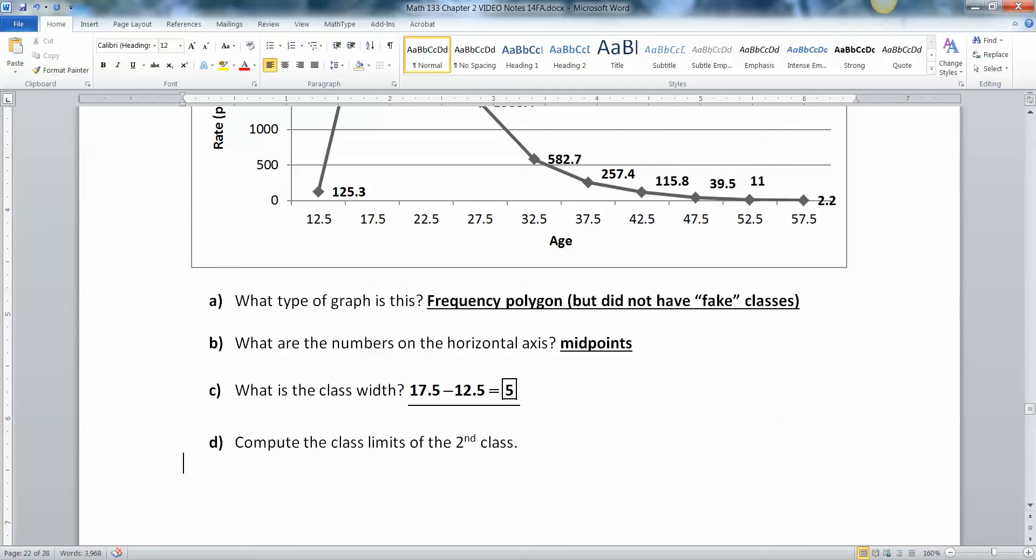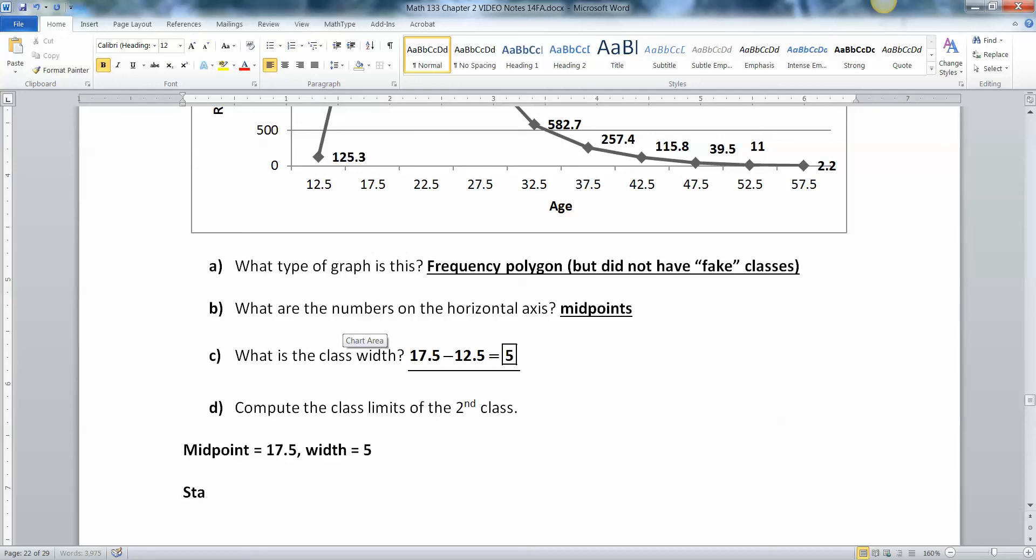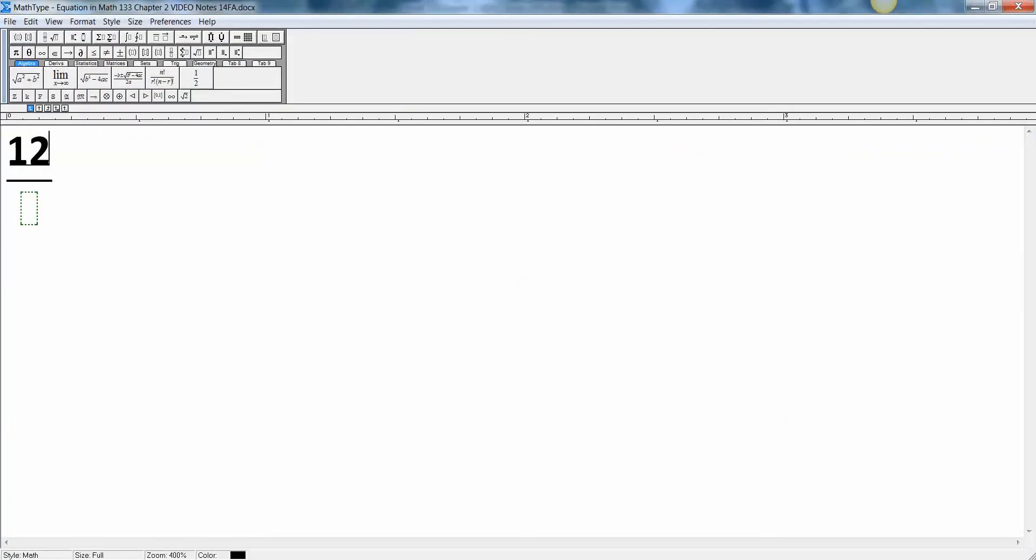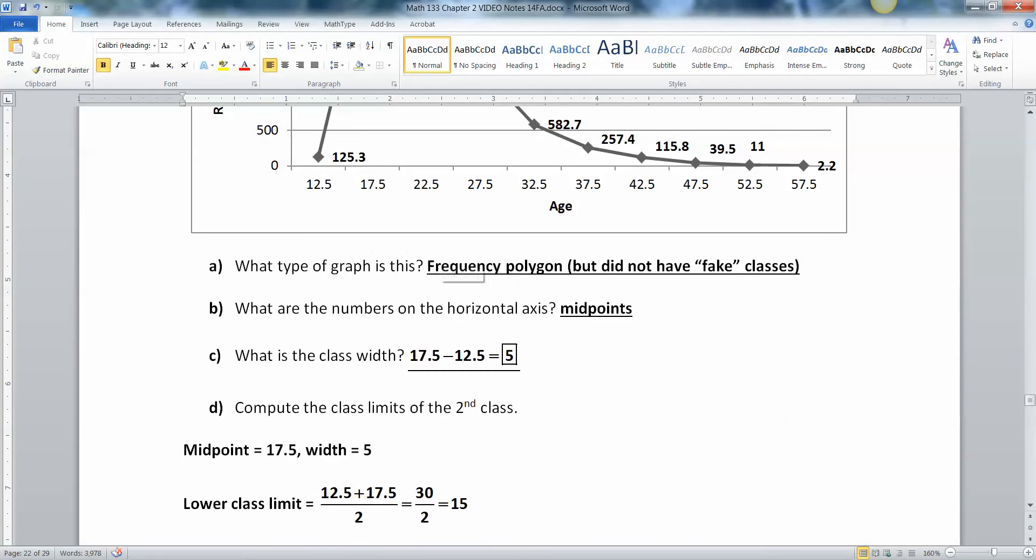All right. Now let's compute the class limits of the second class. All right. So this is where the rubber meets the road here. So the midpoint is 17.5, right? And don't forget that the width is equal to five. So we're going to use those facts to kind of help ourselves a little bit here. All right. So what's halfway between 12.5 and 17.5? That's what we need to know. Because if we know what's halfway between the two of them, then we'll have where that class starts. So the lower class limit is equal to 12.5 plus 17.5, add them up and divide by two, which is 30, divided by two, which is 15.